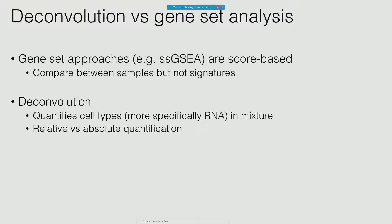Before I dive into the challenge, I want to draw the distinction between deconvolution versus gene set analysis. Gene set type approaches like single-cell GSEA are slightly different from deconvolution in the sense that you're typically generating a score based on some sort of signature, which you can use to differentiate between and compare samples. Whereas deconvolution in the stricter sense is really when you're attempting to quantify different cell types — more specifically, the contribution of RNA from different cell types to a mixture. There's also the distinction of relative versus absolute quantification.